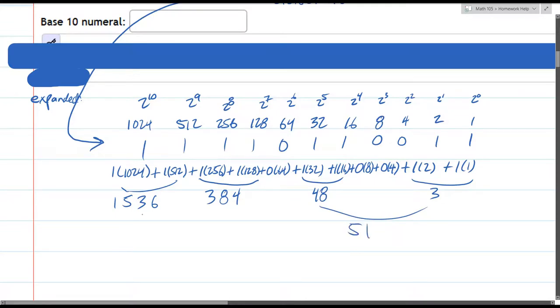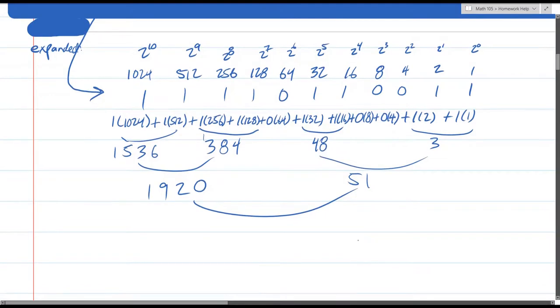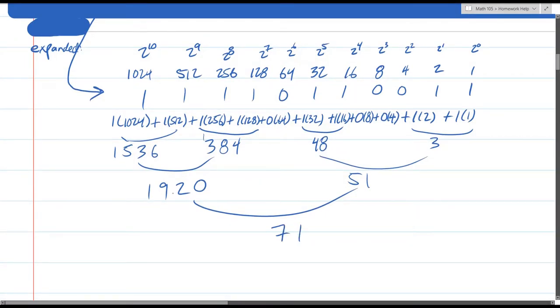0. Carry the 1. 8 and 3 is 11. 12. Carry the 1. 4 and 5 is 9. Add those together. 1. 5 and 2 is 7. 1, 9. 1971.